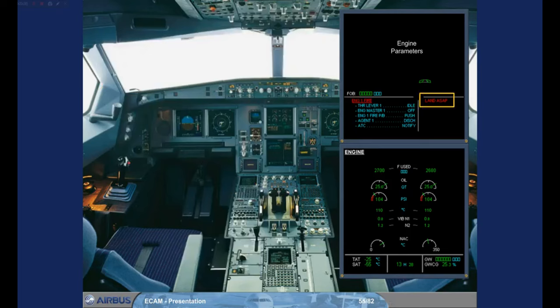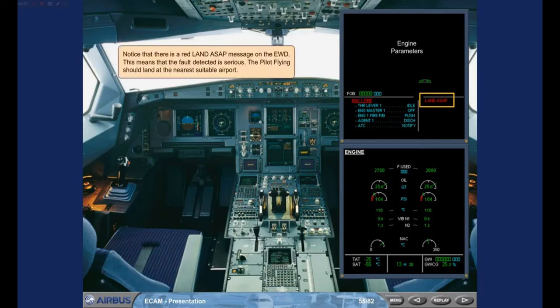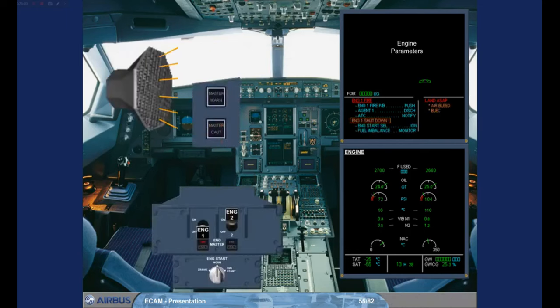Notice that there is a red LAND ASAP message on the Engine Warning Display. This means that the fault detected is serious. The pilot flying should land at the nearest suitable airport. After switching engine 1 off, the after engine 1 shutdown procedure is shown on the Engine Warning Display. Notice that an amber caution message has appeared below the red warning. This happens because you have to finish the engine fire procedure first before carrying out the actions for engine 1 shutdown. The ECAM system has automatically allocated priority to the warning.